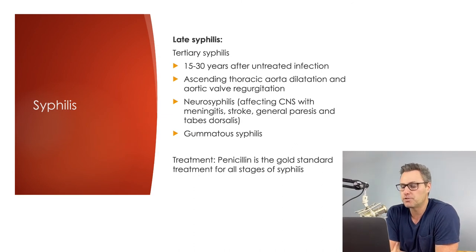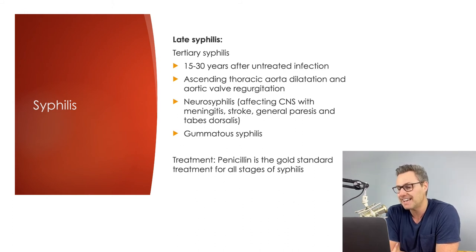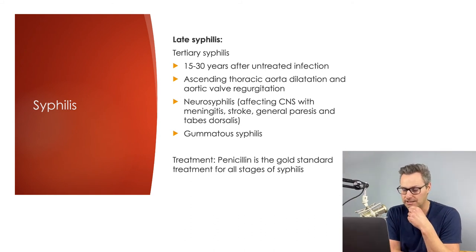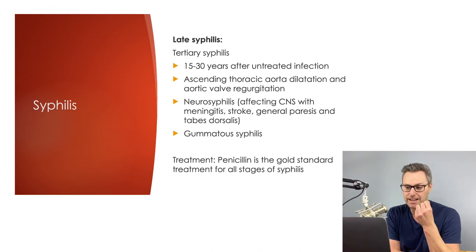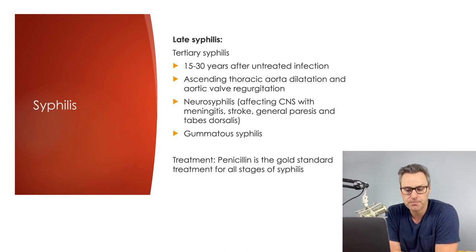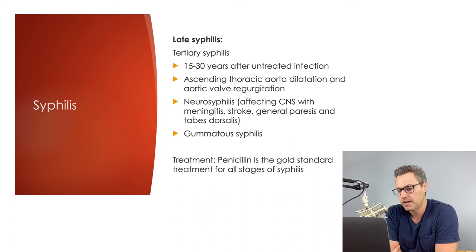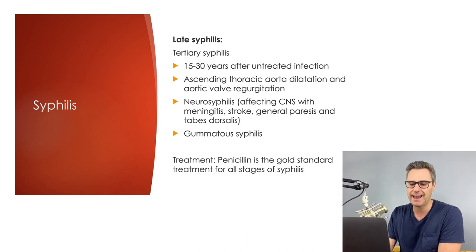Late syphilis includes tertiary syphilis, presenting around 15 to 30 years after an untreated infection. Tertiary syphilis can result in ascending thoracic aorta dilatation and aortic valve regurgitation. Neurosyphilis can affect the CNS, causing meningitis, stroke, general paresis, and tabes dorsalis — which involves the posterior column and posterior roots, resulting in loss of pain sensation, peripheral reflexes, impaired vibration and positional senses, and progressive ataxia until paralysis develops. Finally, gummatous syphilis is rare but characterized by ulcers or heaped-up granulomatous lesions of varying morphologies — round, irregular, or serpiginous — occurring anywhere in the body. Treatment for syphilis is penicillin, the gold standard at all stages.